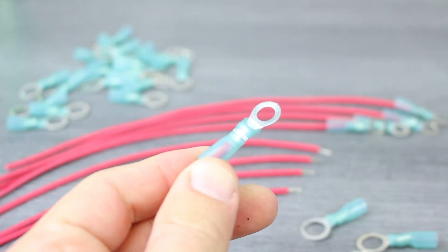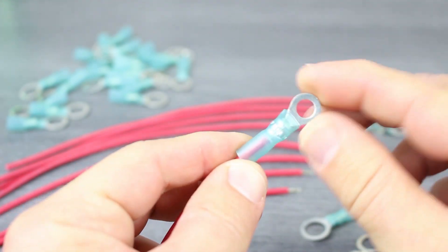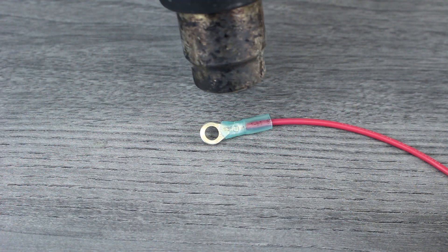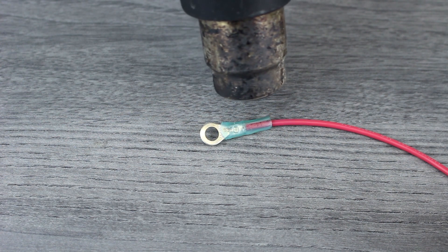When inspecting the crimp, look for clean indentations and ensure that the terminal is not damaged or bent. The next step is to activate the heat shrink using the proper tool.